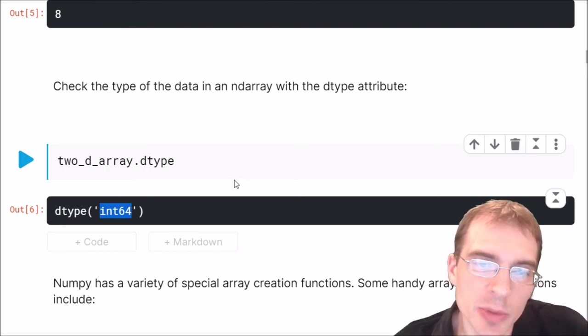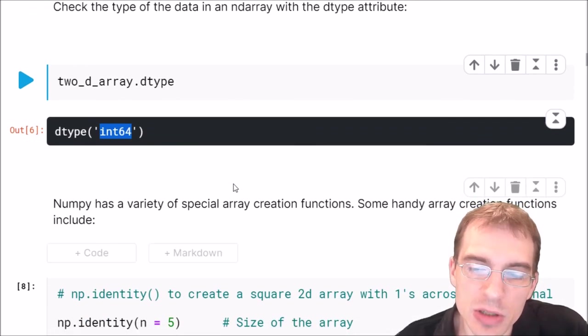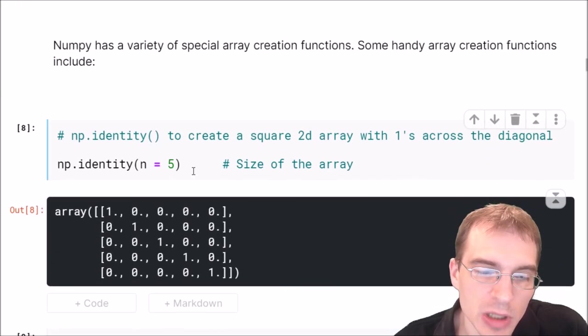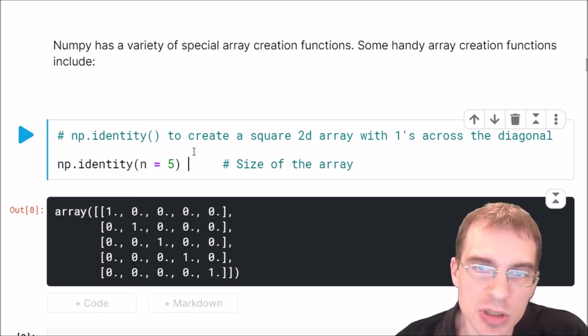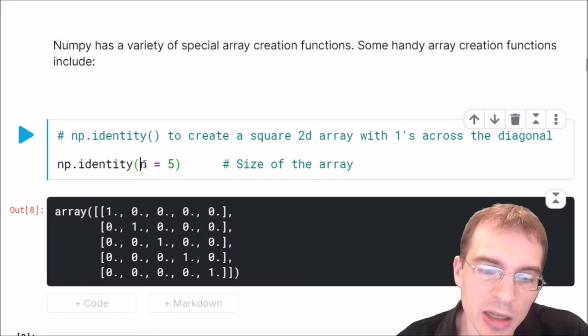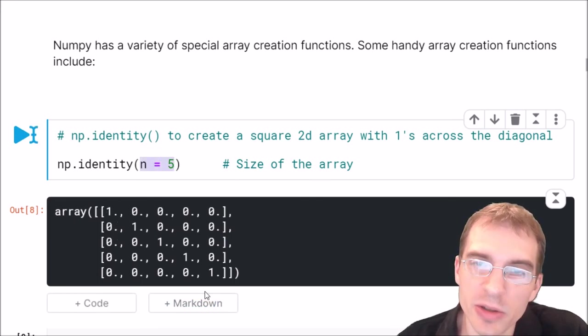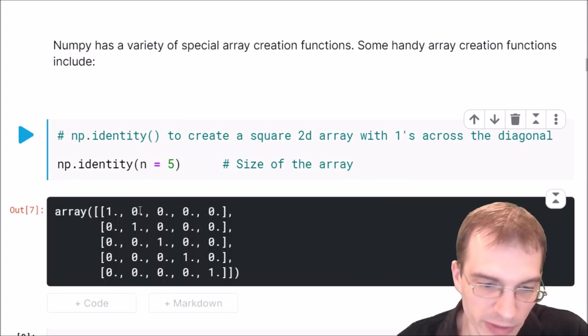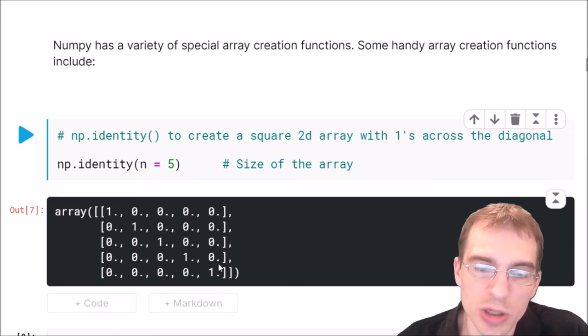Numpy comes with a few special array creation functions that can be handy to make commonly used arrays. If you want to make an identity matrix which is a matrix filled with ones across the diagonal you can do that with the np.identity function. You pass in the argument n to specify the dimensions. In this case it's going to make a square array. The five means it's going to be five by five. If we run that we get a five by five matrix with ones along the diagonal.